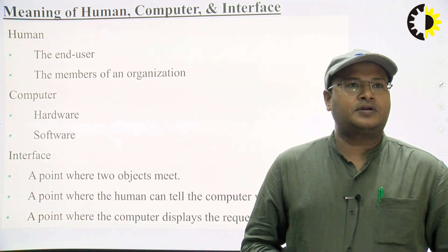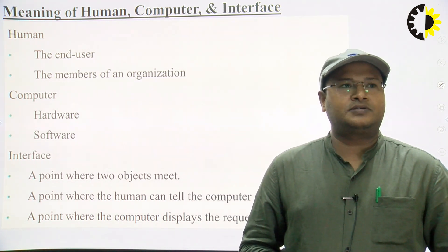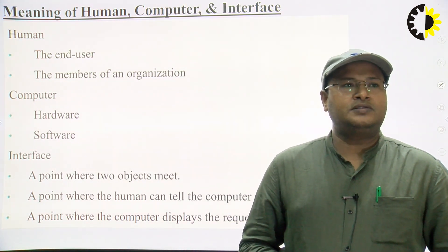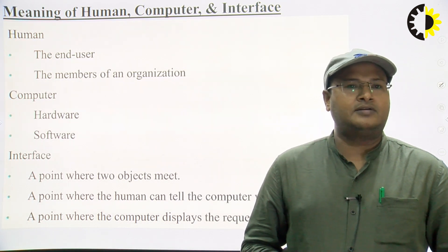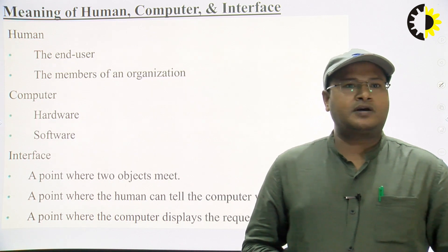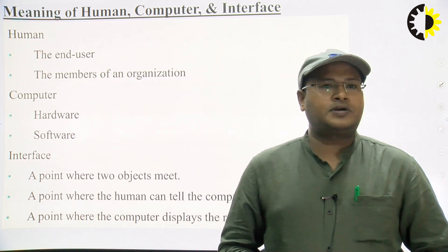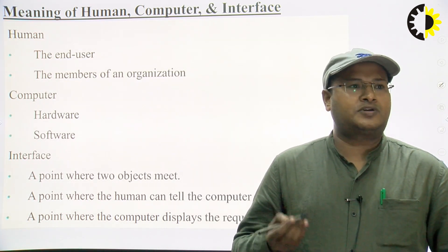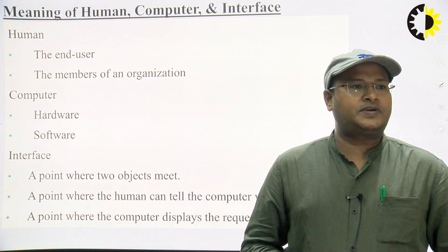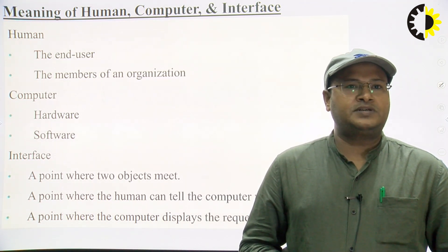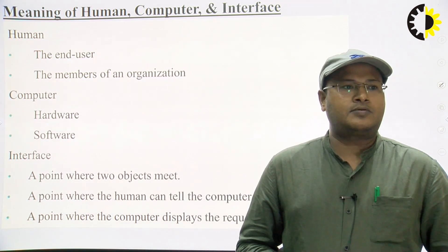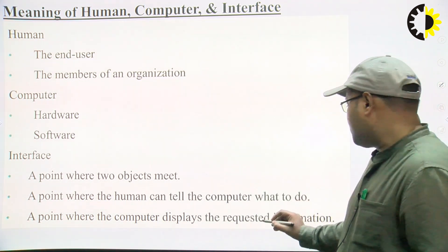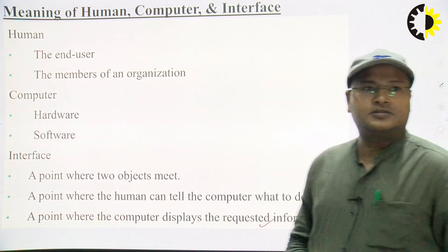Let us understand the meaning of Human, Computer, and Interface. Human is generally the end user — that is called as the customer or client who is using the system — and these are members of an organization. Computer basically contains hardware, and this hardware is supported by software. A point where two objects meet is called as the interface, or a point where the human can tell the computer what to do, and where the computer displays the requested information.